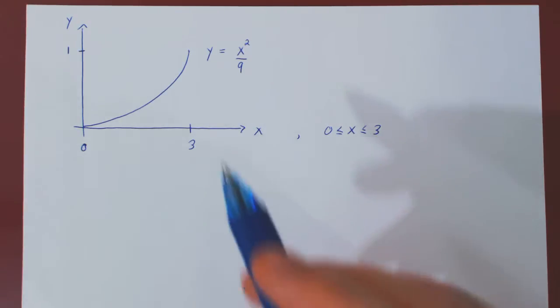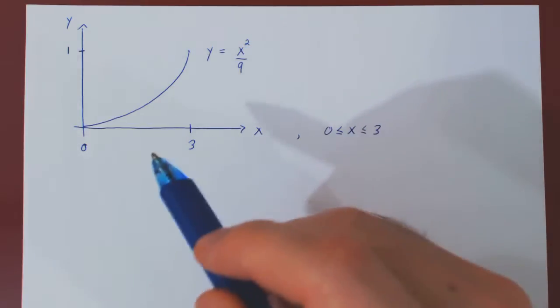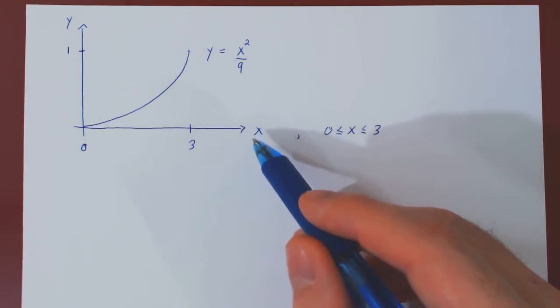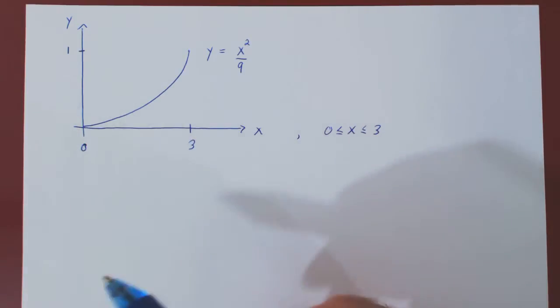Okay, so in this video, we will prove that the function x squared over 9 is a probability density function for the random variable x over the interval from 0 to 3.